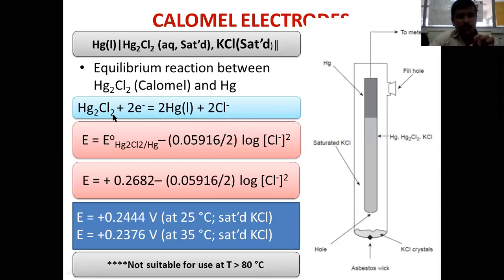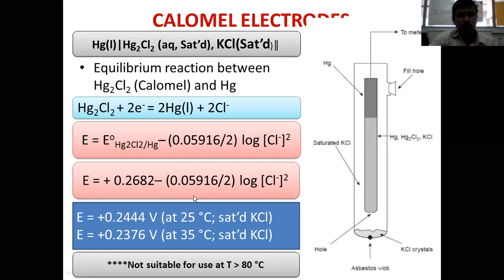Hg₂Cl₂ is a saturated solution so its activity becomes unity; pure mercury is obtained so its activity is also unity. Therefore the E value is related only to the chloride ion concentration. From the electrochemical series, E° for the Hg₂²⁺/Hg couple is +0.2682 V. Substituting the saturated KCl concentration at 25°C, the E value for this anodic reference electrode is +0.2444 V.